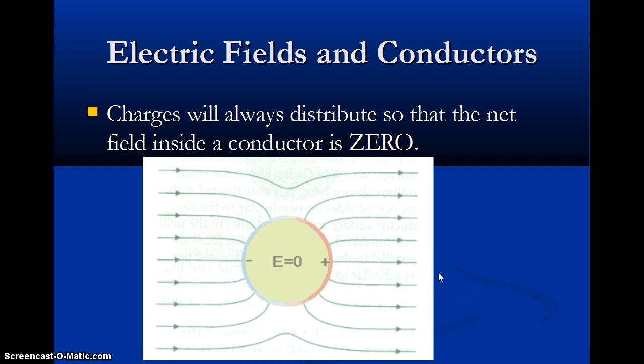If you've ever put a piece of aluminum foil or a fork or something like that in a microwave, you can see. So what happens, the electric field is trying to get to zero and all the charges are moving around.